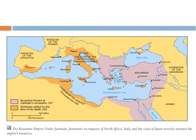This map shows Justinian's territory. The Byzantine Empire is in pink — that's what it was when he took it over. Then he added the orange territory, trying to recreate the Roman Empire, but it didn't really last — the territory was lost a few years later.